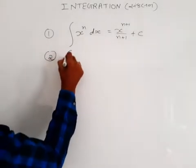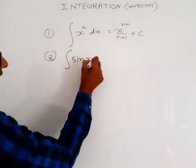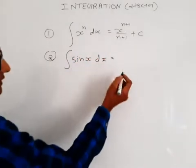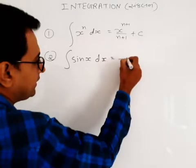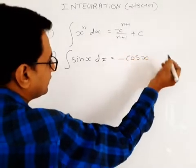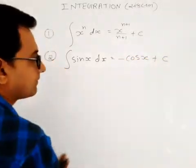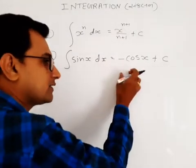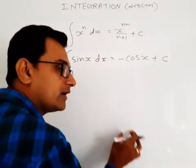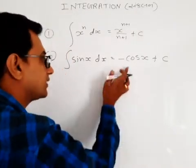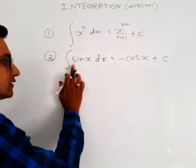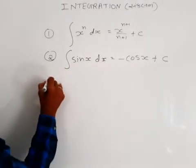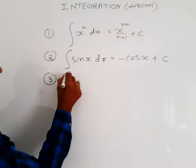Suppose integration of sin x dx — so integration of sin x dx is minus cos x plus c. In the last lecture, the differentiation of cos gives minus sin, but here its reverse: the integration of sin gives minus cos.